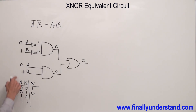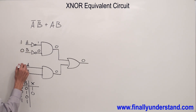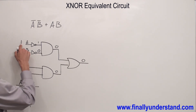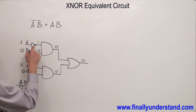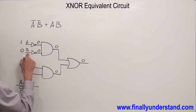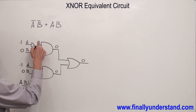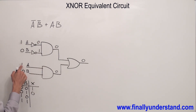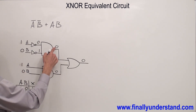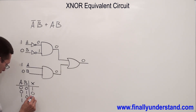A has to be changed to 1, and B has to be changed to 0. 1 inverted gives me 0, and 0 inverted gives me 1. 0 AND 1 gives me 0. 1 AND 0 gives me 0. 0 OR 0 gives me 0. That's why I have 0 over here.